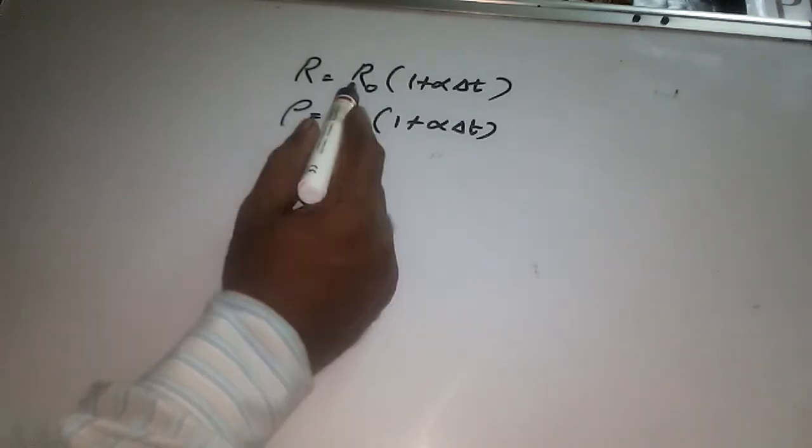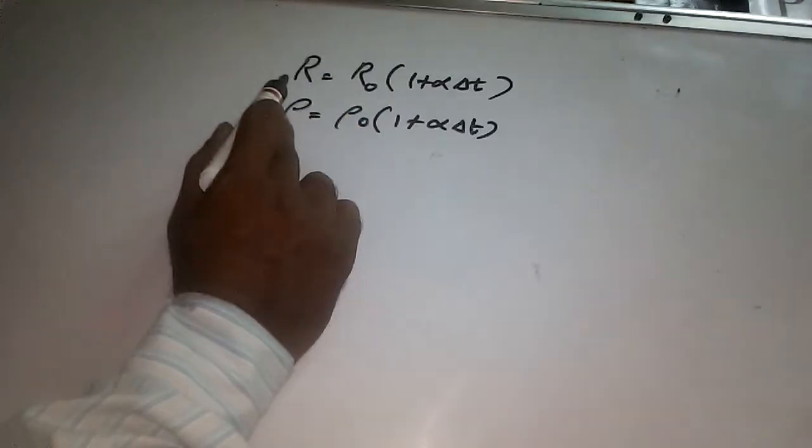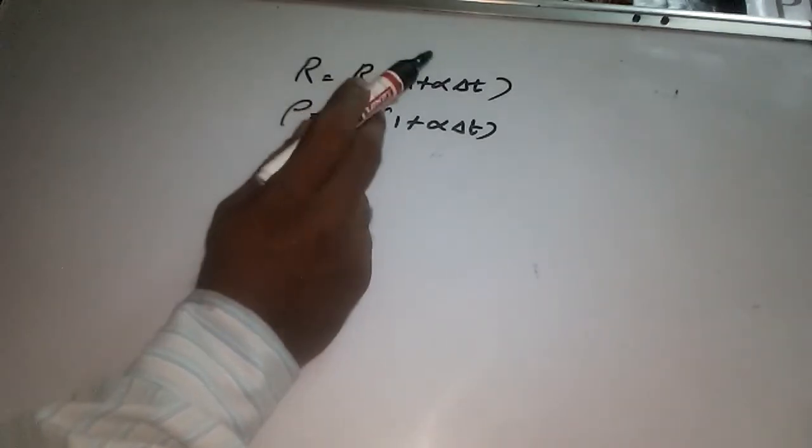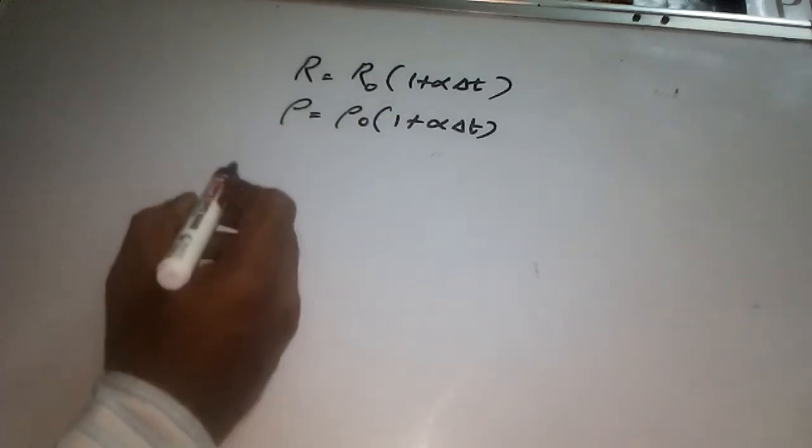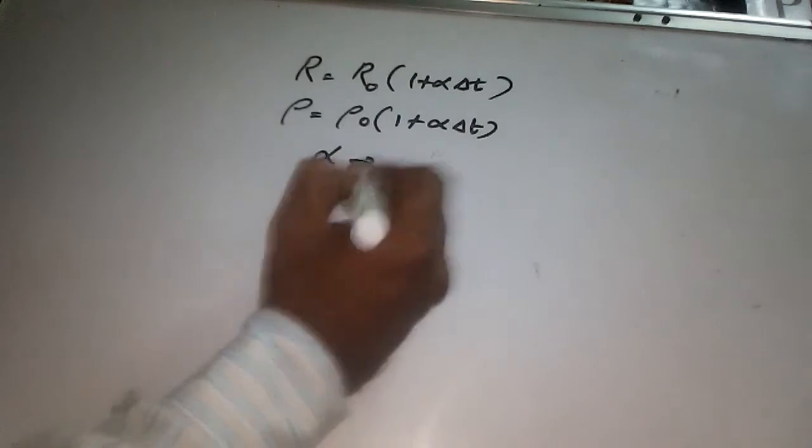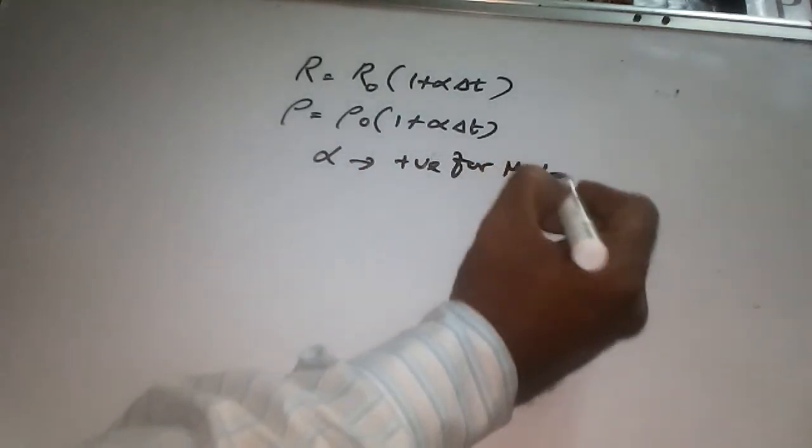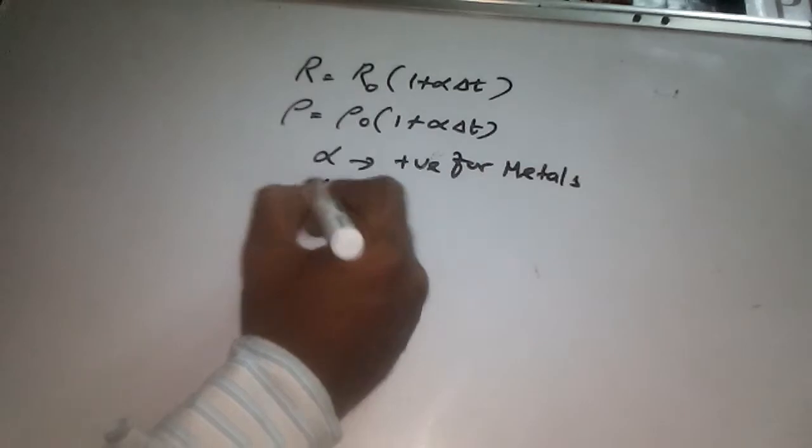Here R not is resistivity at zero degrees Celsius or R is the resistivity at a particular temperature. For metals, alpha is positive. For conductors, alpha is negative for non-metals.